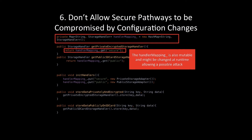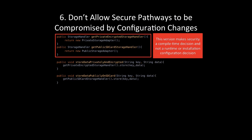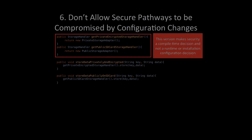The way we can improve this is by making our secure pathway something decided at compile time — we don't want runtime errors or configuration decisions to affect it. The simple approach is to change our getPrivateEncryptedStorageHandler method to not use the handler mapping at all, but instead to directly instantiate the appropriate handler — in this case, the private storage adapter — to ensure it's always returned correctly. We don't want the handler mapping to change at runtime due to unanticipated circumstances, or be initialized incorrectly by a configuration file.